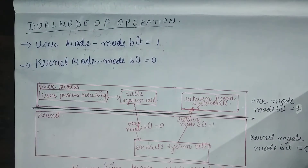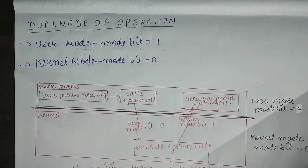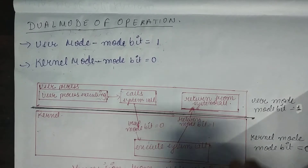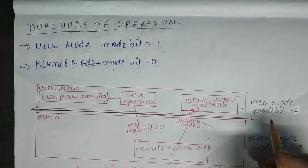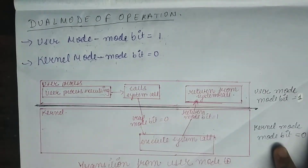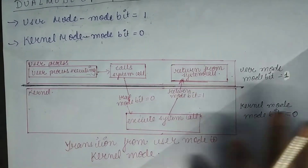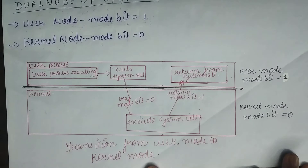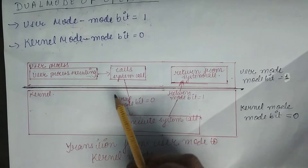At the time of system boot, the hardware starts in kernel mode, and then the operating system is loaded. That operating system then starts user applications, which run in user mode. Now let's discuss the transition from user to kernel mode.